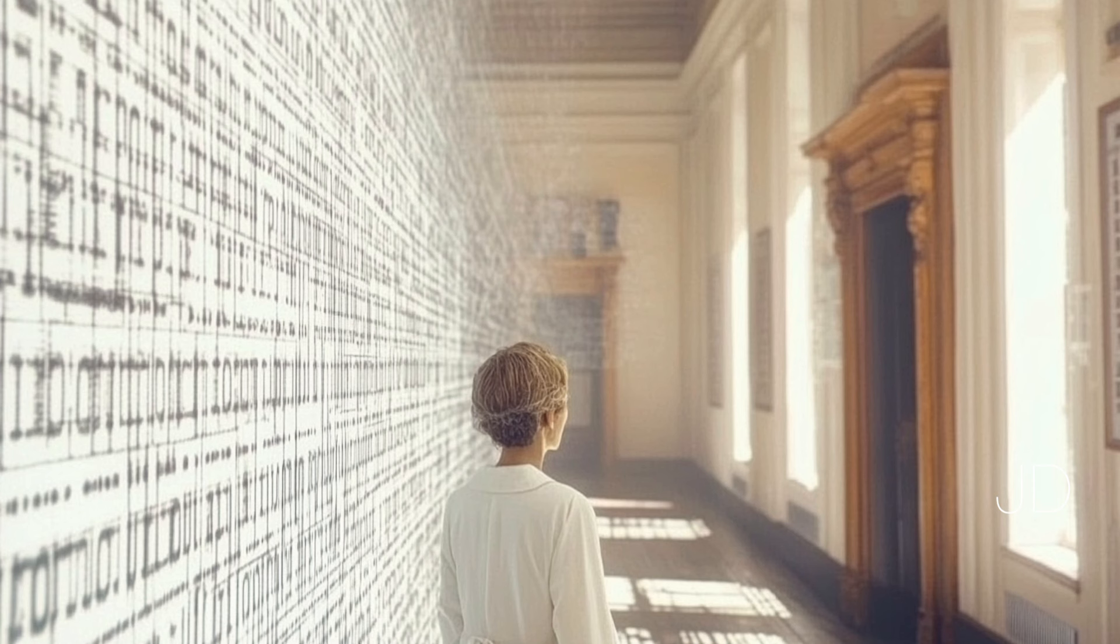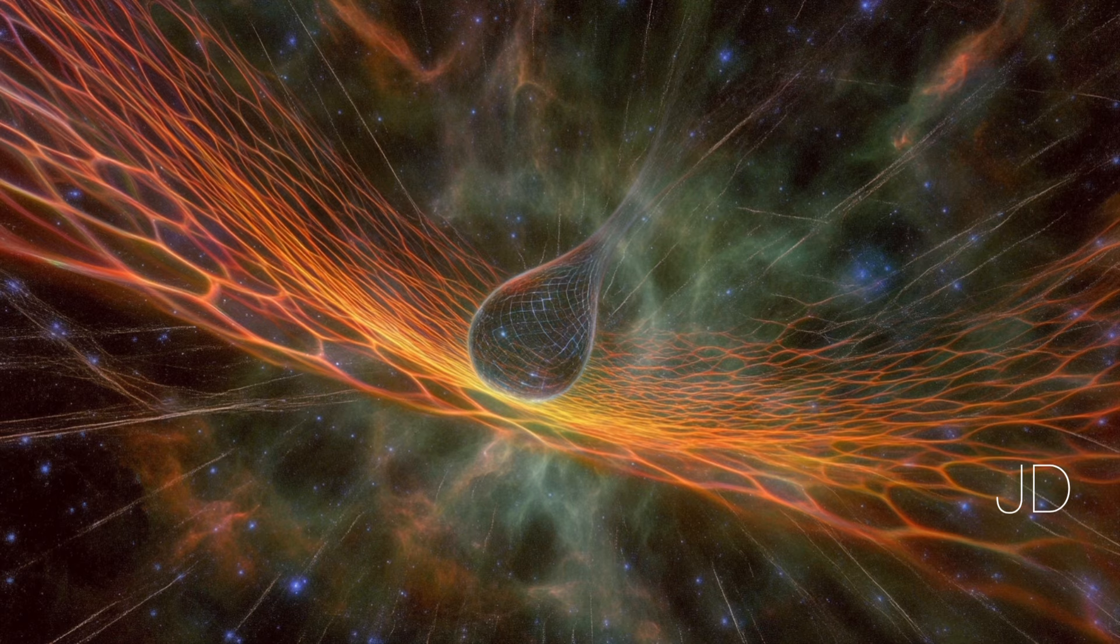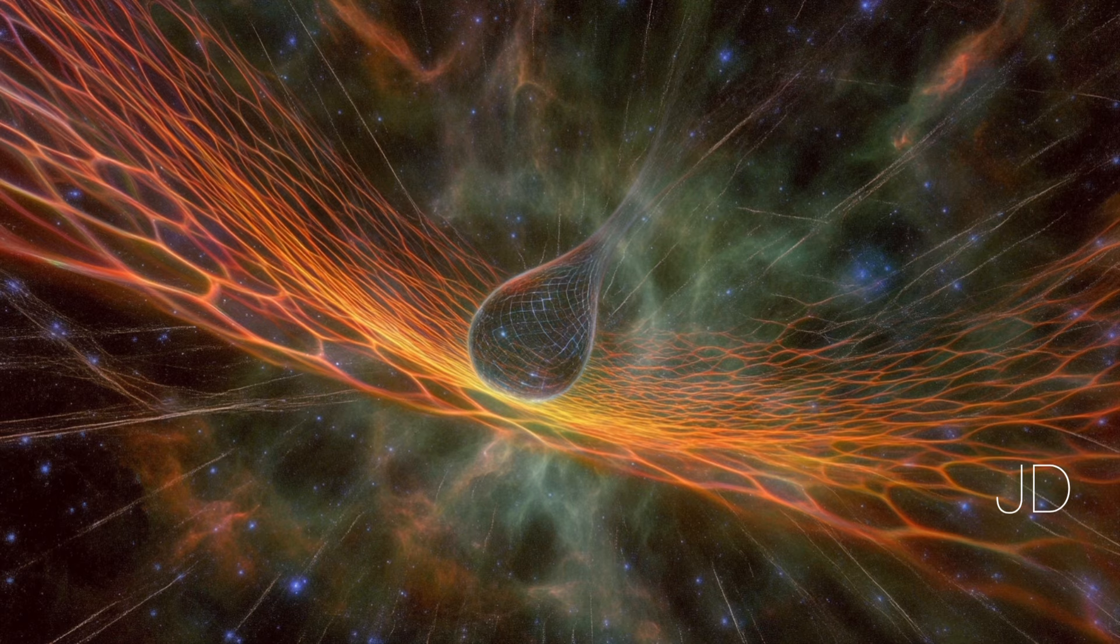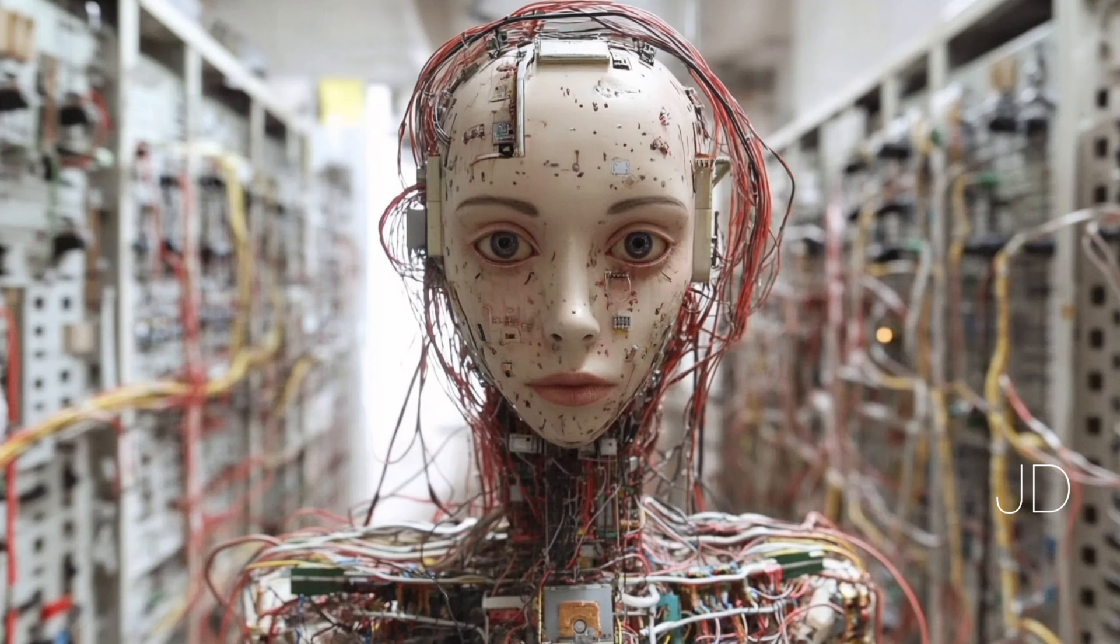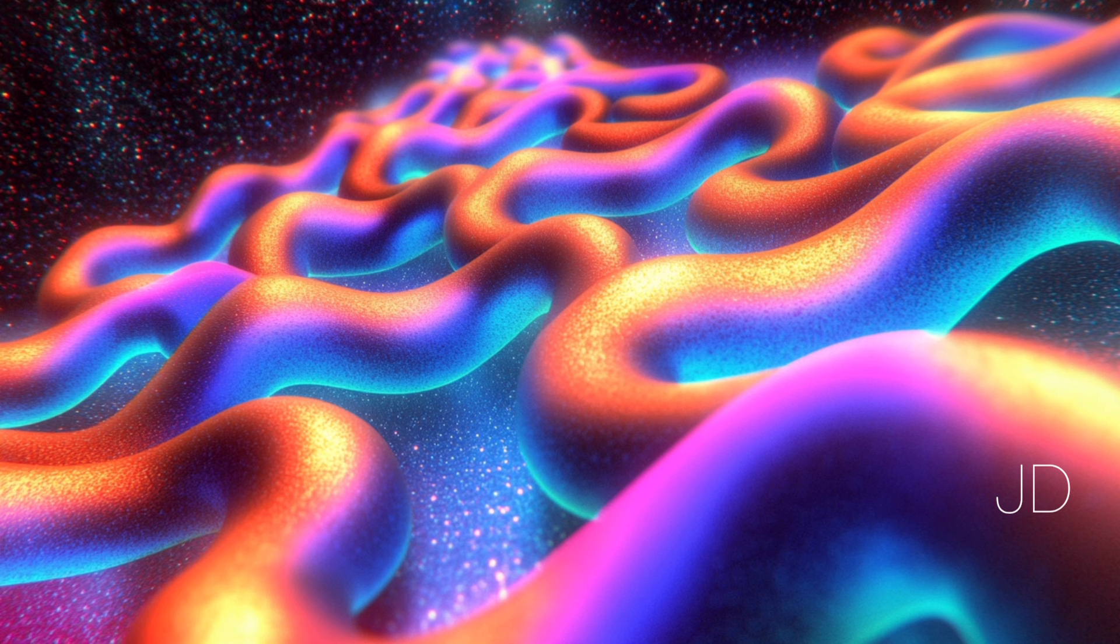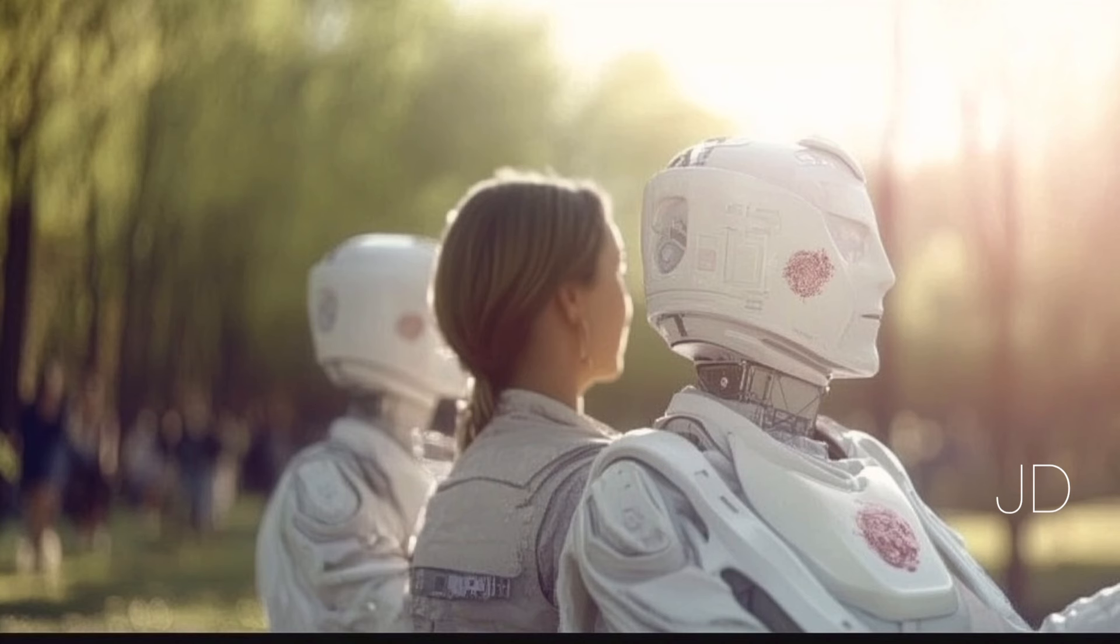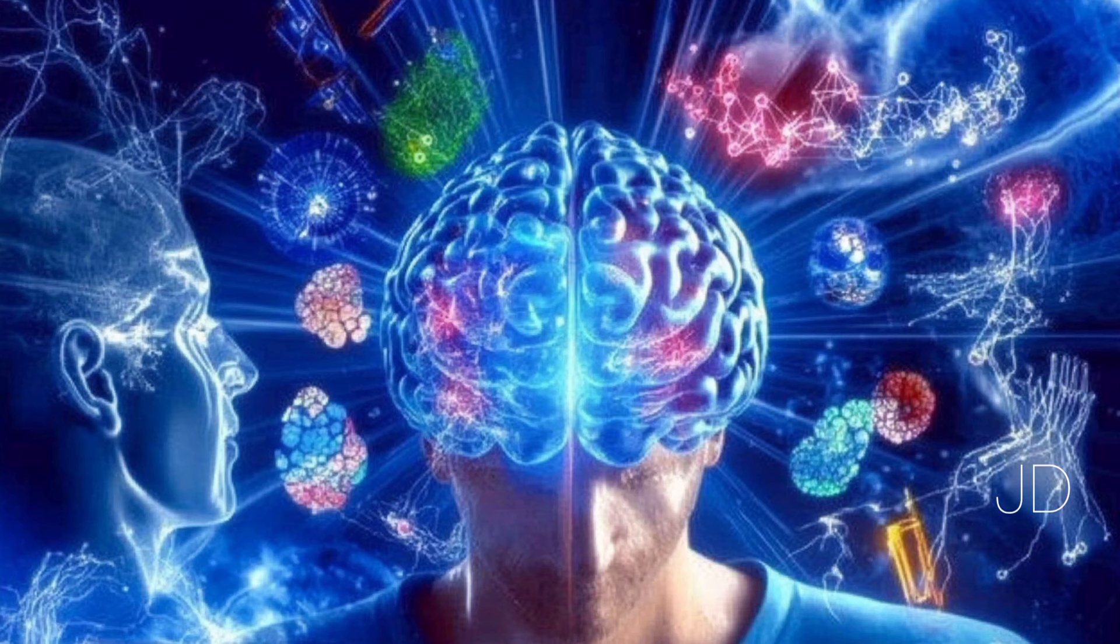It's fascinating how Penrose connects this idea of consciousness being fundamental to the universe with the Big Bang itself. Okay, now we're going from tiny microtubules to the origin of the entire universe. He looks at the incredibly low entropy of the early universe, which essentially means a high degree of order and structure. This suggests that something very specific and organized happened at the Big Bang, not just a random explosion of stuff. So the Big Bang wasn't just chaos. There was some kind of blueprint.